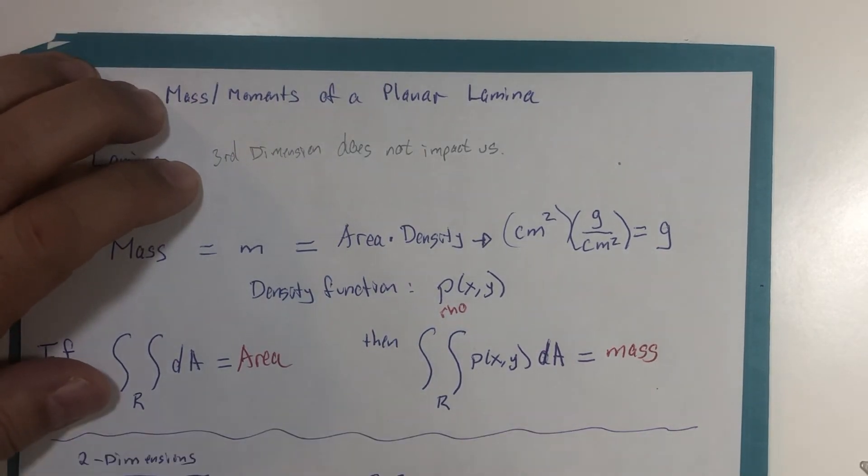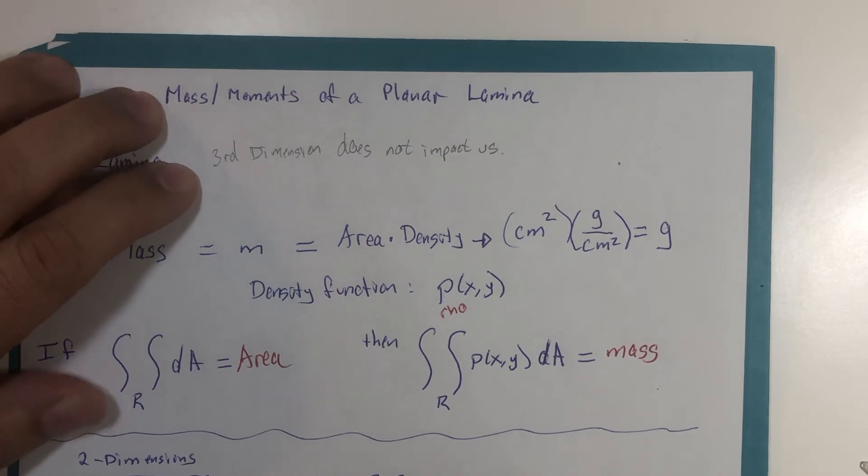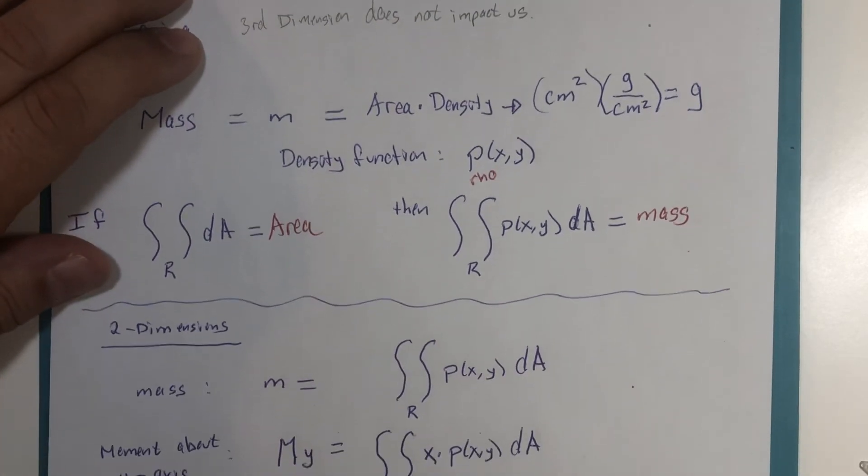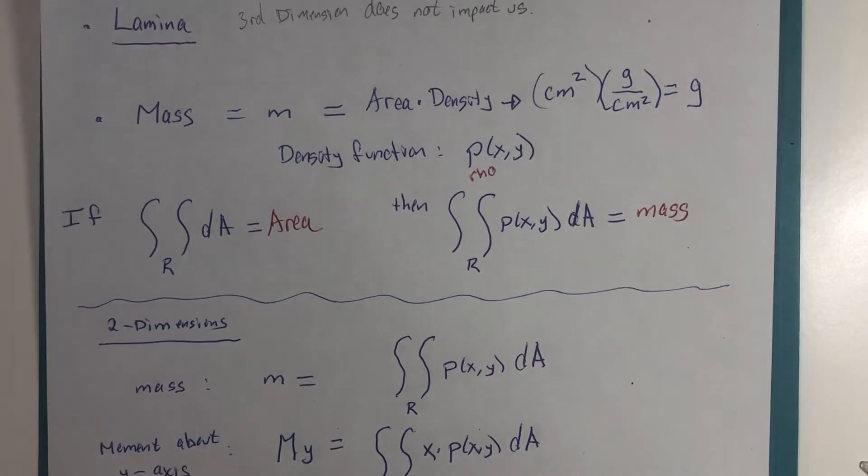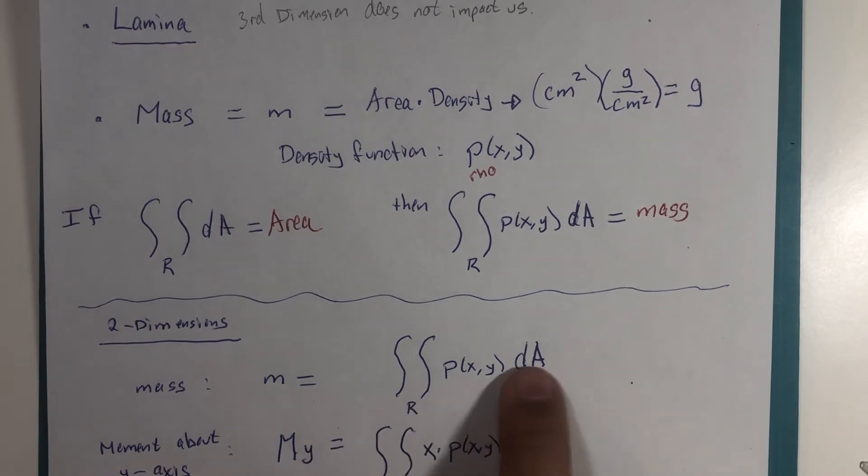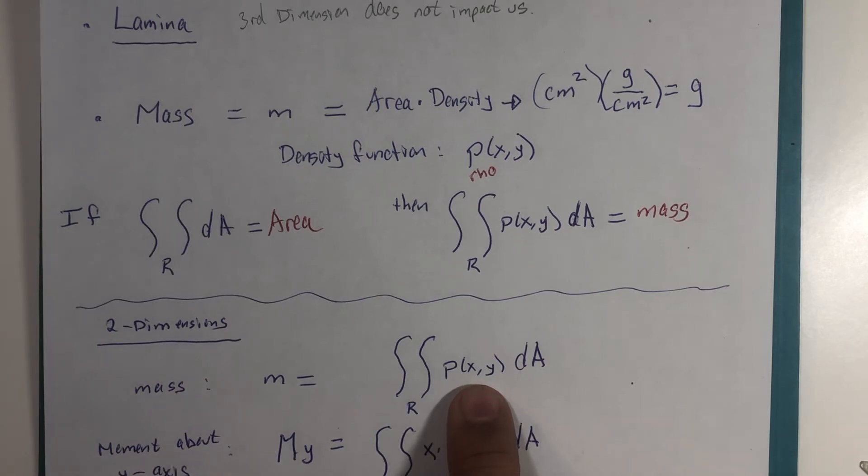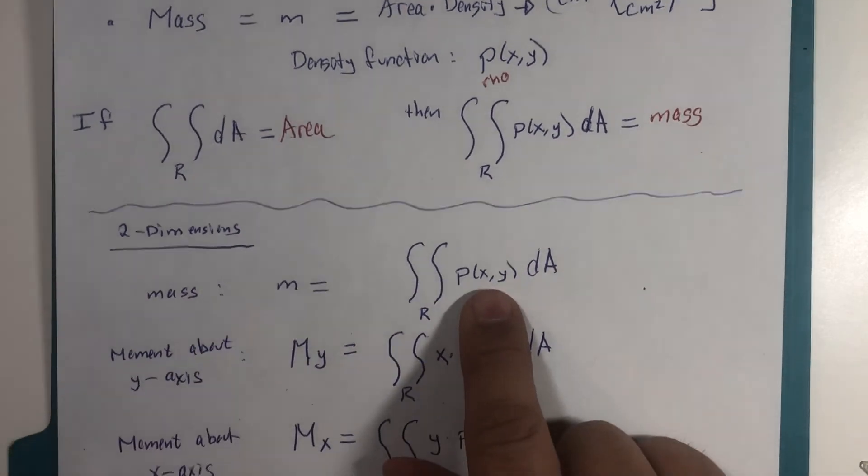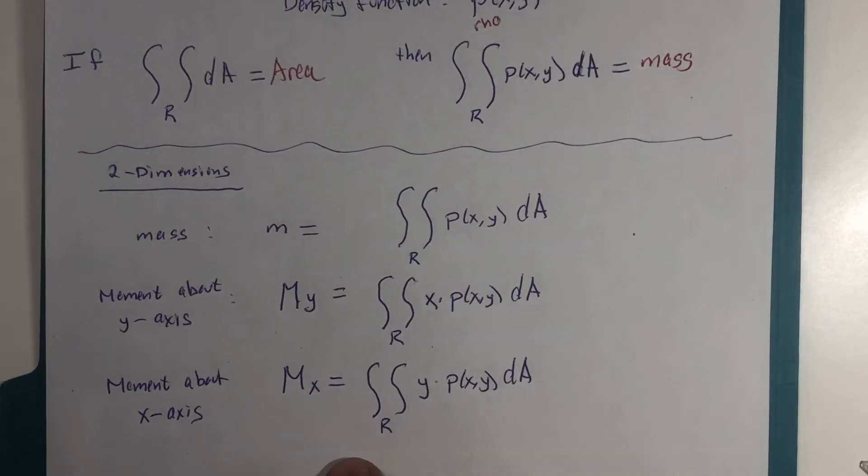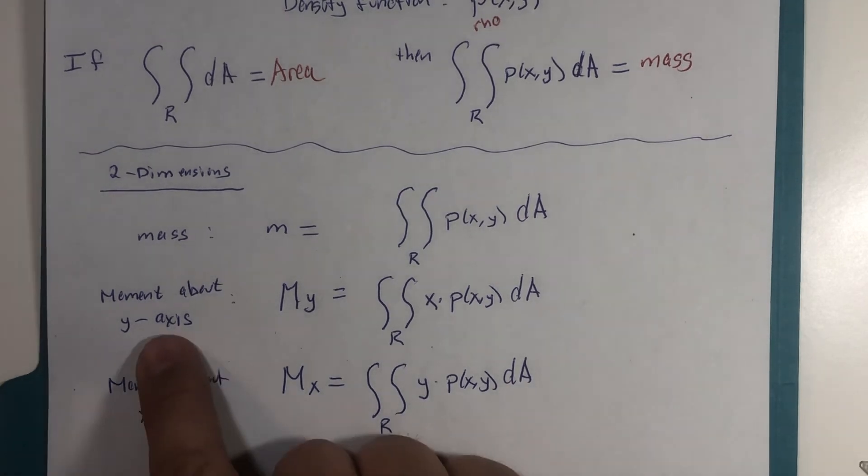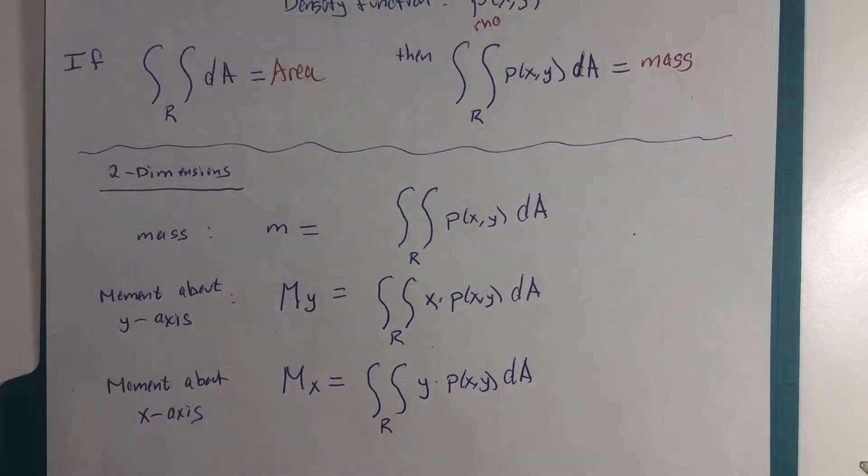All right, so now let me just unfold our formulas and highlight them a little bit. So we have mass is the integral of our region, a double integral over the density function.